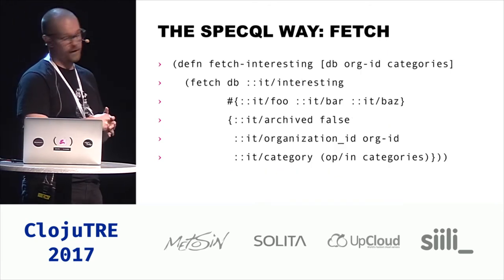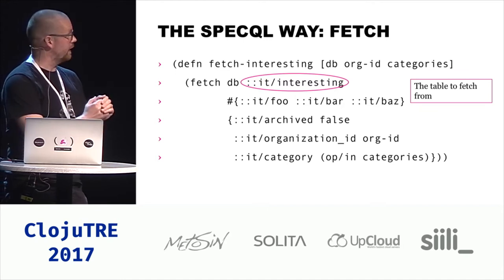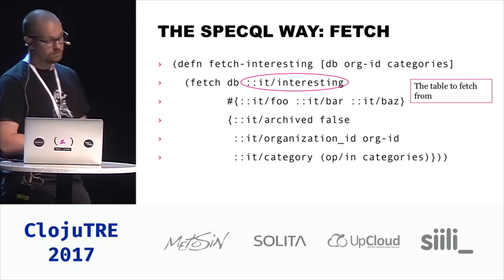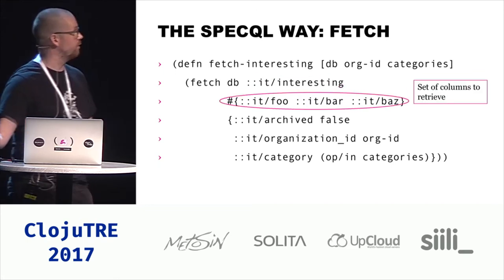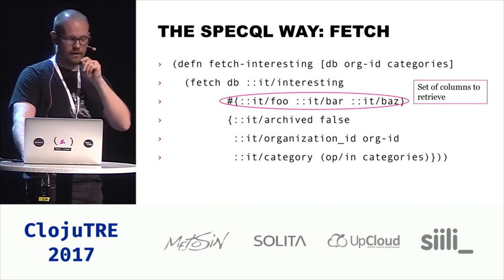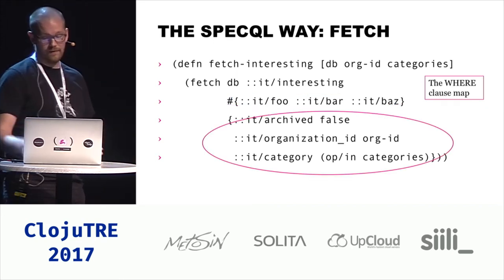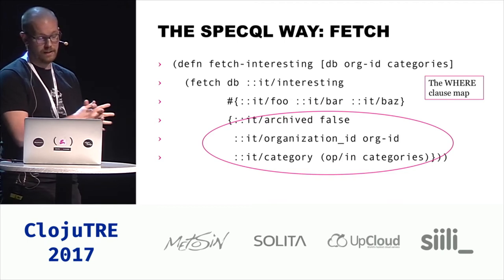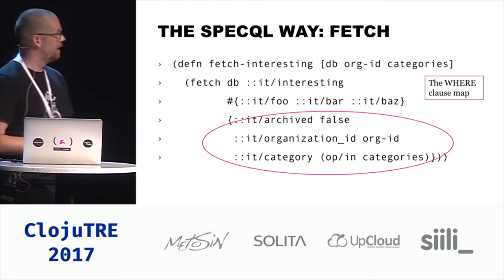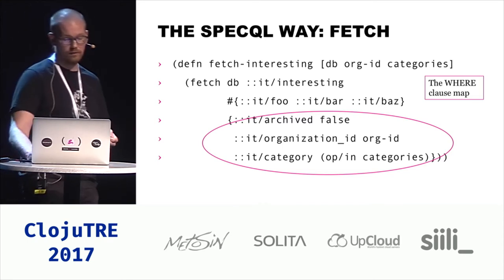Here's an example of fetching. Fetch is the generic fetch function in SpecQL. It takes a database connection — anything that Clojure Java JDBC can use, so that's what you already use. It takes a table to fetch from, and then a set of columns to retrieve from the table. These are all namespaced keys for the columns, and they are all checked when you run it, so you cannot make an error of putting a wrong key here. SpecQL will tell you if there is no such column in this table. Then there's the where clause map, which can be just a map with the column name and the value to compare against, or you can have operators like op-in. All basic standard SQL operators are supported — less than, equal, in, like, and so on. You can write your own — it's just a protocol. You can combine them with AND and OR.